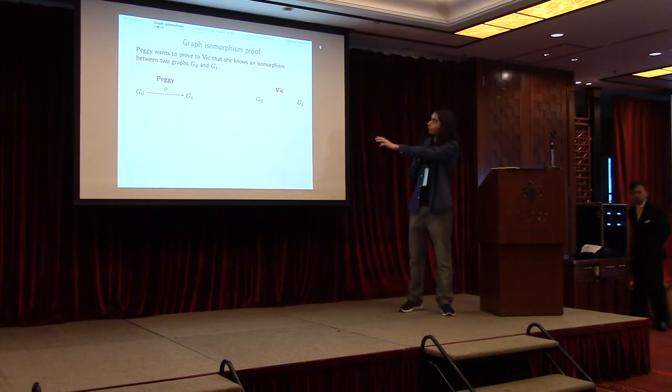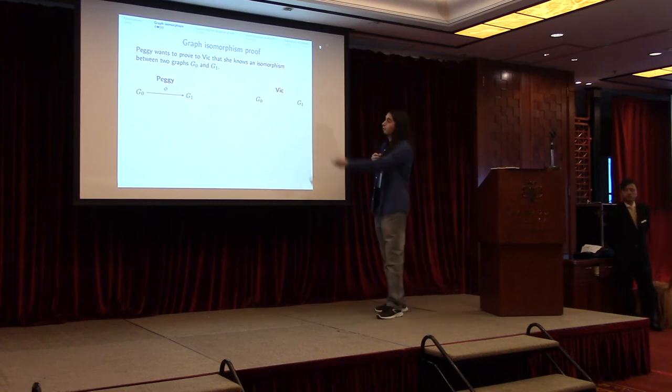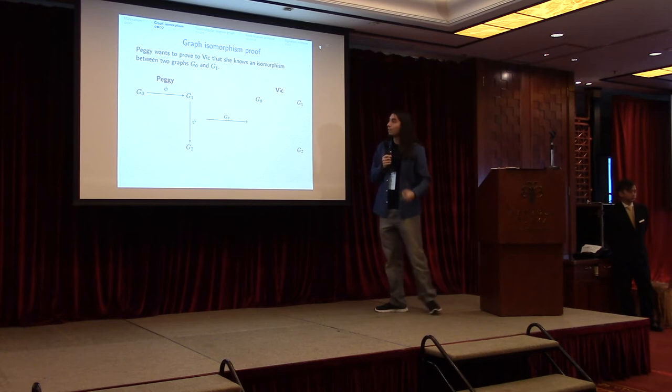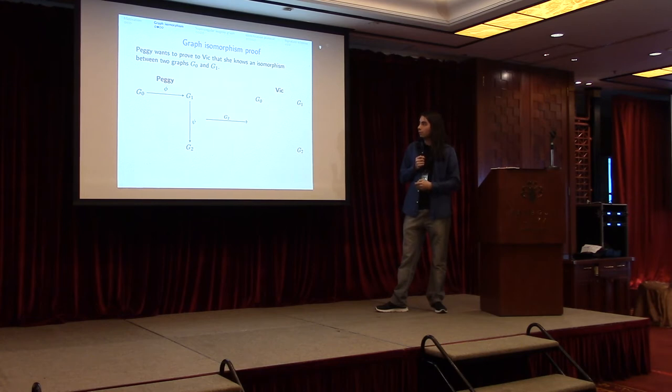I will represent on the left part of the screen what Peggy knows and on the right part of the screen what Vic knows. The difference right now is that Peggy knows the secret, this isomorphism, and Vic doesn't. So how does the protocol work? Well, first Peggy takes a random permutation of the graph G1 and produces another graph G2 and sends this graph to Vic but without sending the permutation.